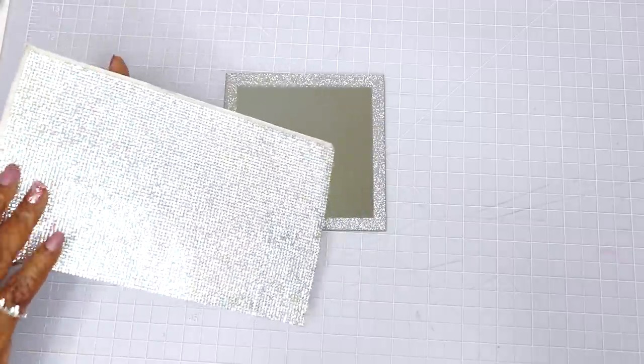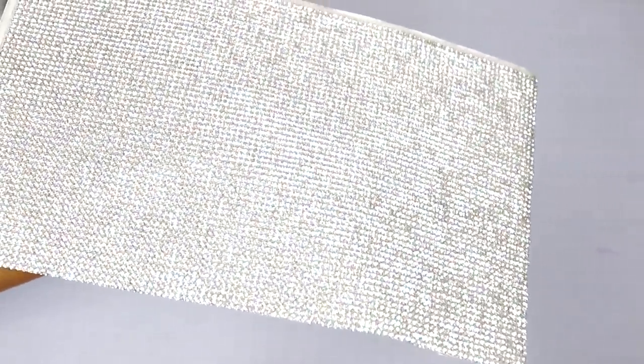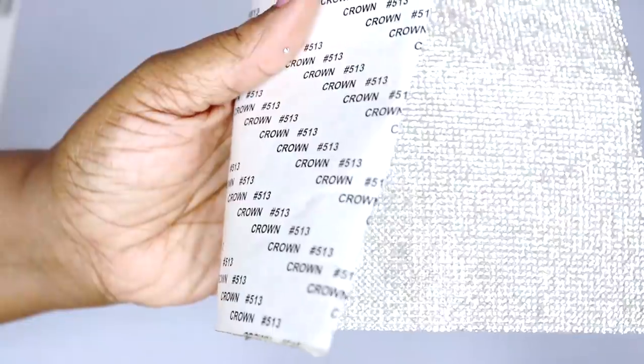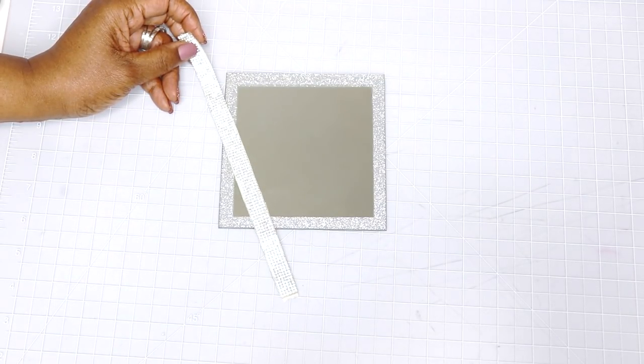I showed you guys this trim in another video. If you're interested in the info on this trim I will link it in the cards above. This is like tiny little diamonds adhered to an adhesive backing. I'm going to cut these into strips about a half an inch wide and apply it to the mirror.